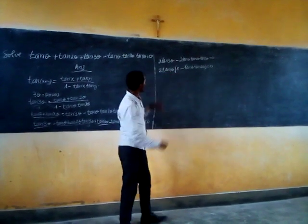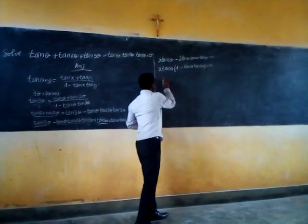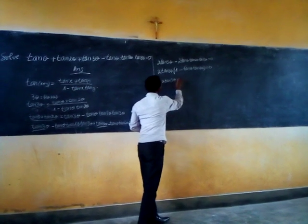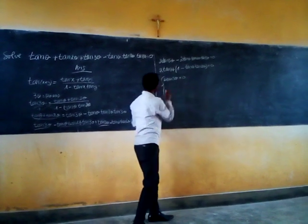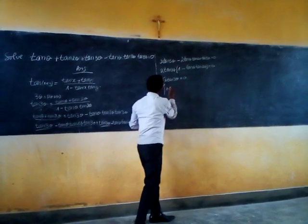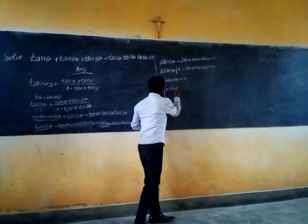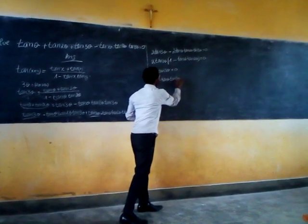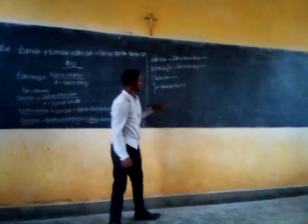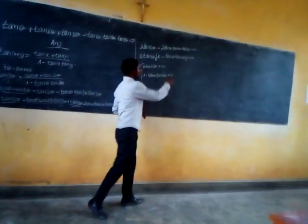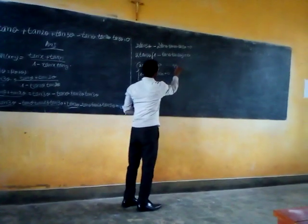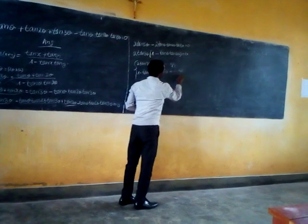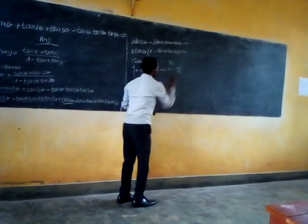So, what we are going to do: tan(3θ) equals zero, and 1 minus tan(θ) times tan(2θ) equals zero. Let theta equal zero. This is equation number 1 and this is equation number 2.